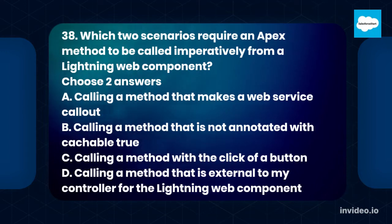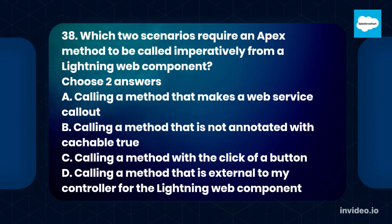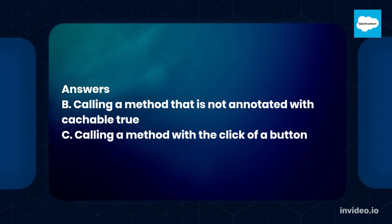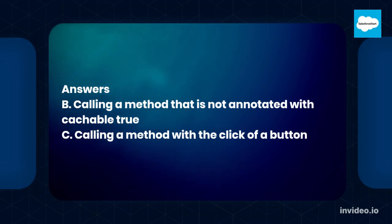Question 38. Which two scenarios require an Apex method to be called imperatively from a Lightning Web Component? Choose two answers. A. Calling a method that makes a web service callout. B. Calling a method that is not annotated with cacheable true. C. Calling a method with the click of a button. D. Calling a method that is external to the controller for the Lightning Web Component. Answers: B. Calling a method that is not annotated with cacheable true. C. Calling a method with the click of a button.